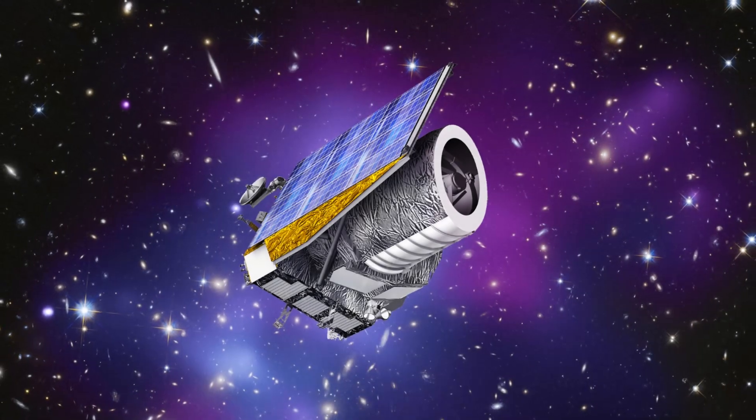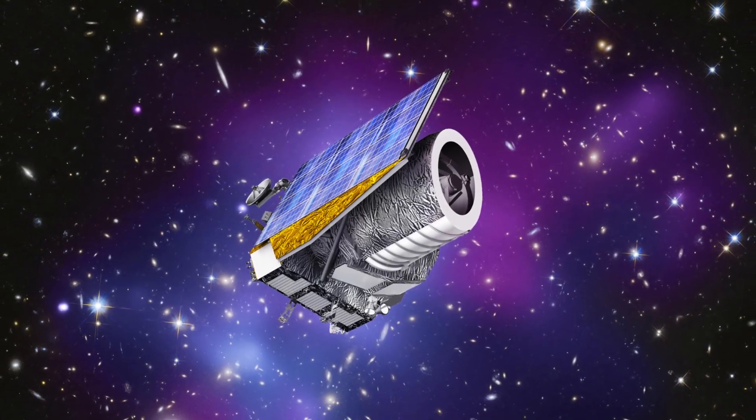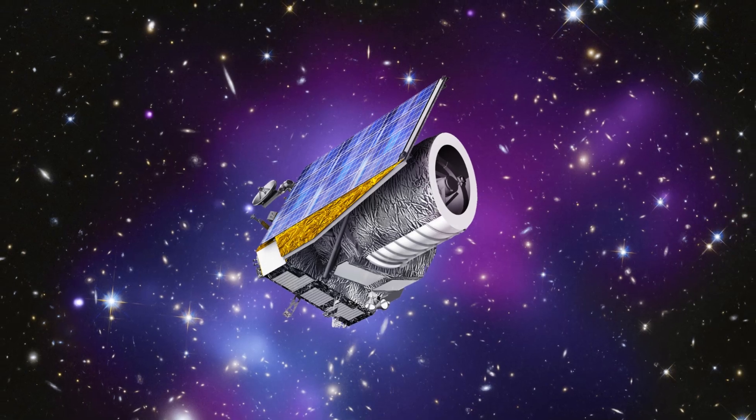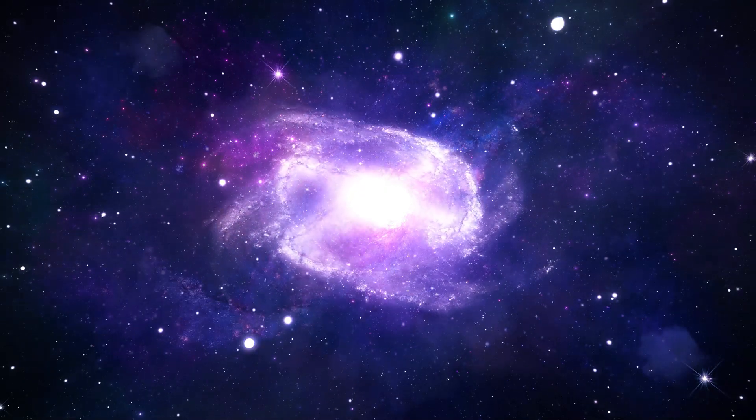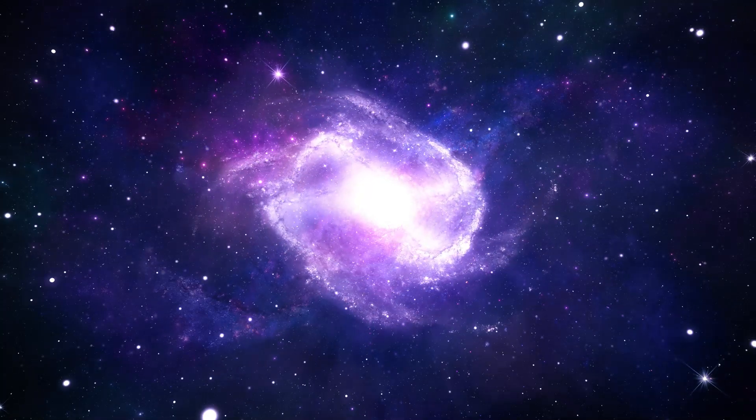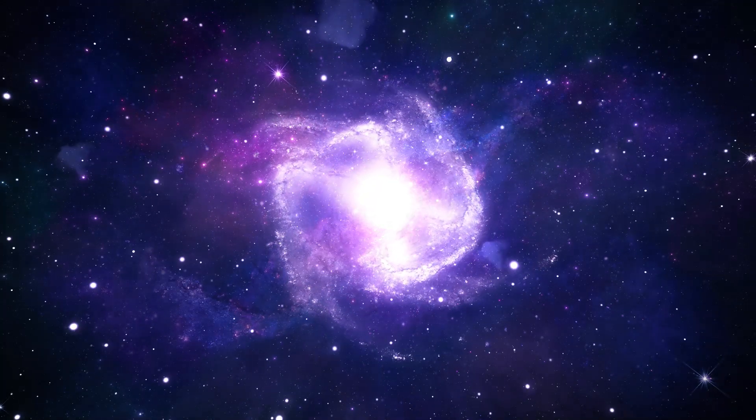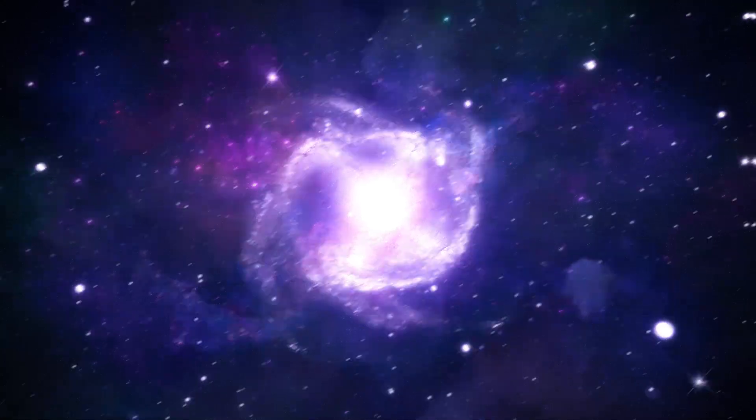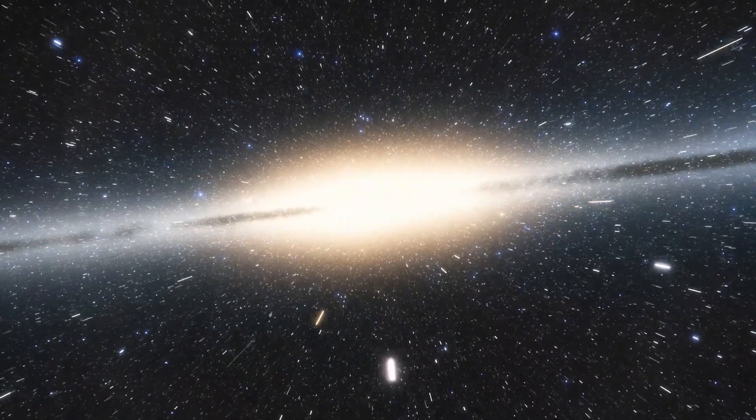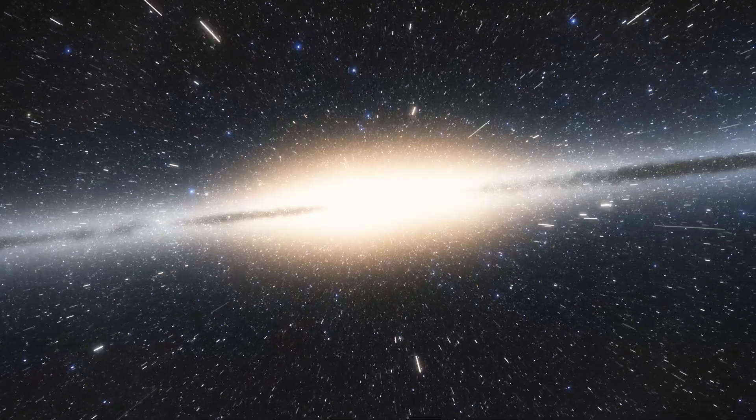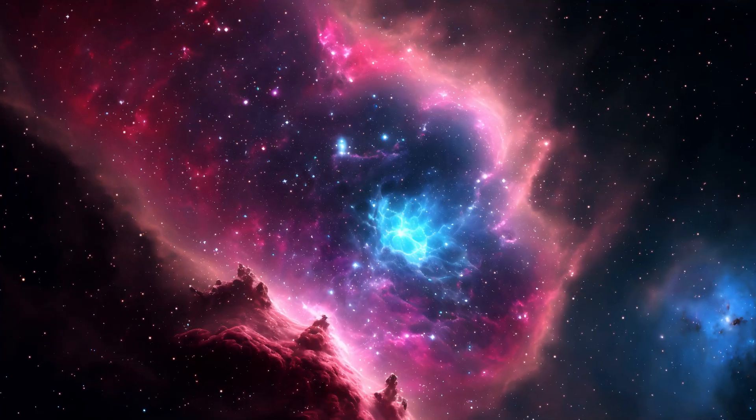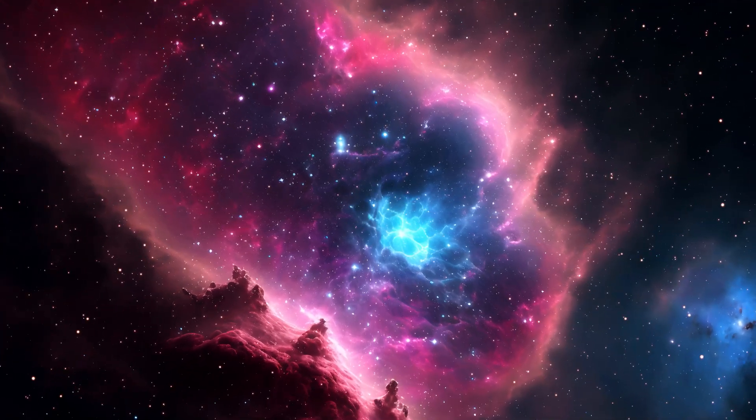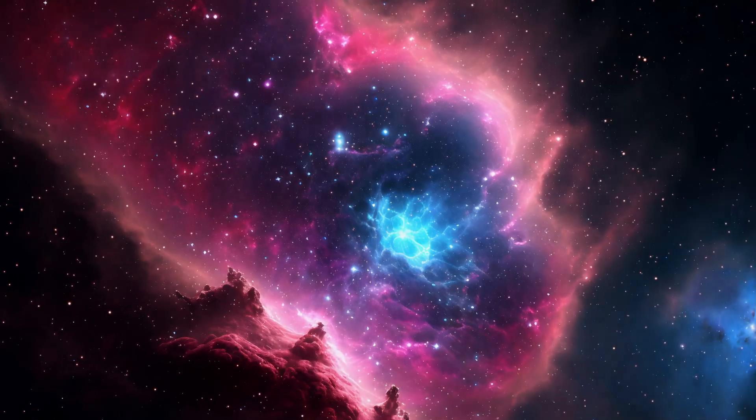The Euclid spacecraft is a collaborative project led by the European Space Agency with valuable contributions from NASA. Its primary mission is a grand endeavor to construct a comprehensive three-dimensional map of the universe, incorporating time as the third dimension. This ambitious undertaking involves the observation of billions of galaxies, extending as far as 10 billion light years away. The ultimate goal is to craft a comprehensive chart that vividly illustrates the cosmic evolution over the lifetime of the universe.